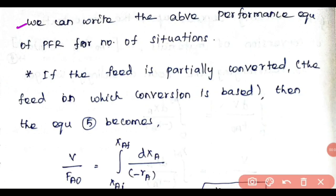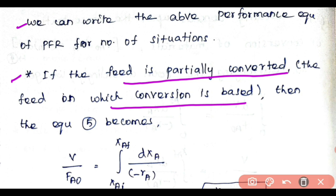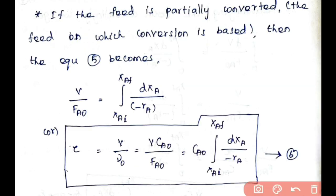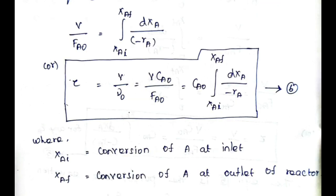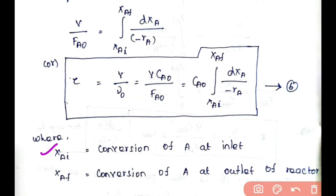We can also write the performance equation for different situations. If the feed is partially converted, Equation 5 becomes: V/FA0 = ∫_{XAI}^{XAF} dXA/(−rA), and τ = V/ν0 = V·CA0/FA0 = CA0·∫_{XAI}^{XAF} dXA/(−rA). This is Equation 6, where XAI is the conversion of A at the inlet and XAF is the conversion of A at the outlet of the reactor.